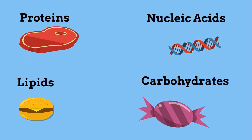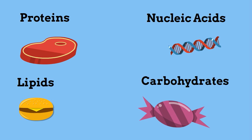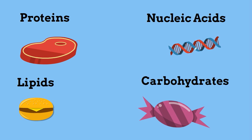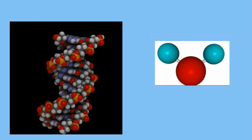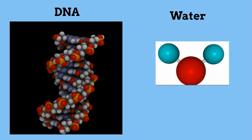A macromolecule is a large molecule formed when elements and molecules combine together. Elements like carbon, hydrogen, and oxygen join together to make a macromolecule. Each macromolecule is unique and is made up of different smaller molecules. Look at the macromolecule DNA compared to a water molecule.